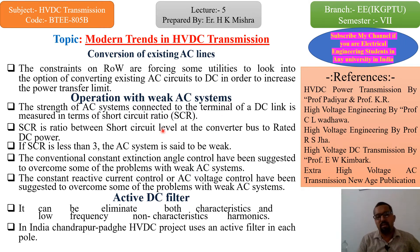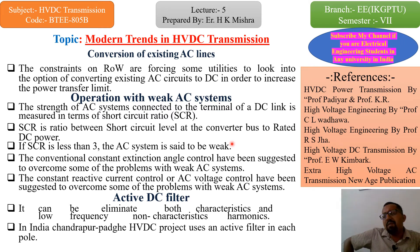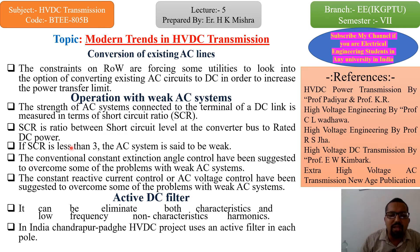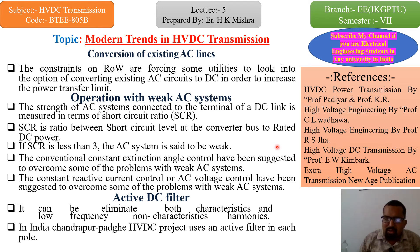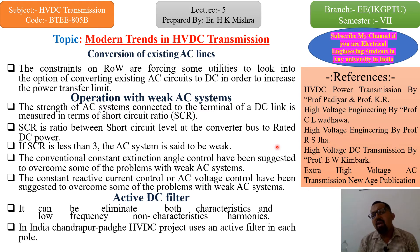Then, operation with weak AC systems. The strength of an AC system connected to the terminal of a DC link is measured in terms of Short Circuit Ratio (SCR)। SCR के base पे हम पूरा analysis करते हैं कि transmission network efficient है या नहीं। If the short circuit ratio is less than 3, the AC system is said to be weak। जब numerical calculation से SCR की value less than 3 हो जाती है, तब हम कहते हैं कि AC system weak है और उसको as soon as possible DC link में convert करना पड़ेगा।